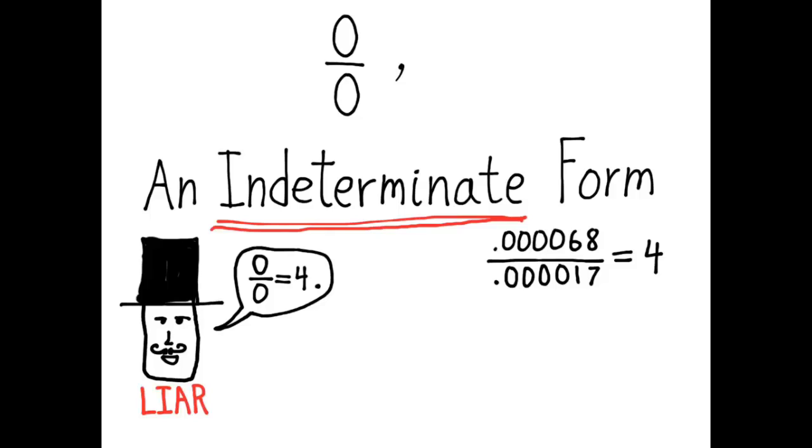All right, even more persuasive is consider the function x squared minus 4 over x minus 2. Okay, so what's the value of f of 2? If you substitute 2 in, you get a 0 in the numerator and a 0 in the denominator. So this liar can claim, well, f of 2 is equal to 0 over 0.